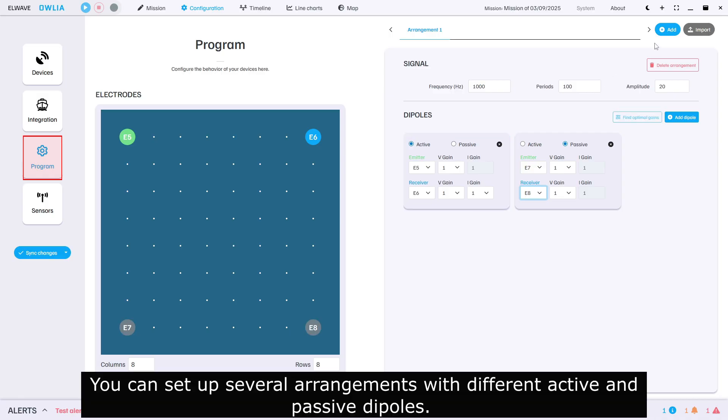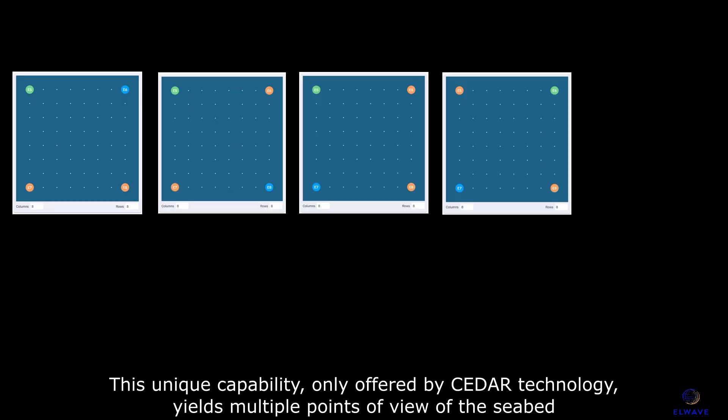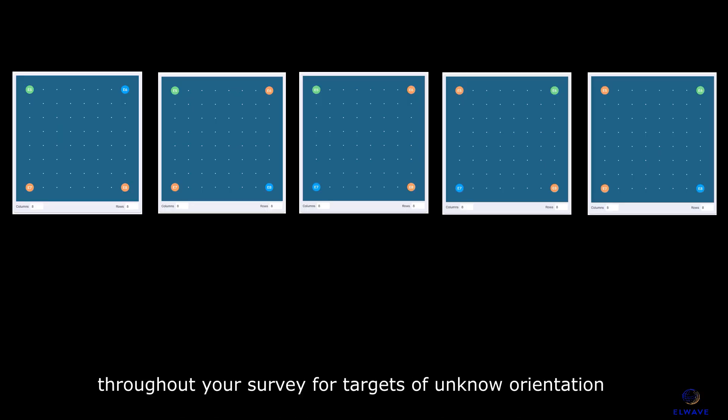You can set up several arrangements with different active and passive dipoles. This unique capability only offered by SIDA technology yields multiple points of view of the seabed throughout your survey for targets of unknown orientation.